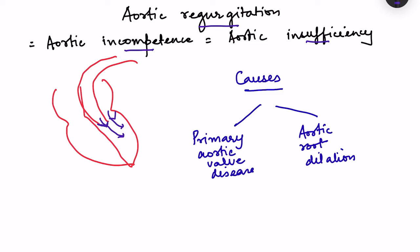The main causes of aortic regurgitation involve either primary disease of the valve itself or dilation at the root of the aorta. Primary aortic valve disease may occur due to rheumatic heart disease, congenital bicuspid aortic valve, or infective endocarditis. Aortic root dilation can occur due to connective tissue disorders.